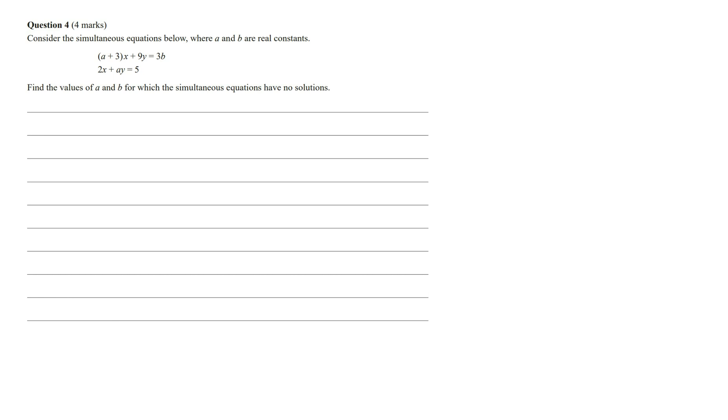In this video, I'm going to show you how to answer the 2023 Maths Methods Sample Exam 1, Question 4. We've got: Consider the simultaneous equations below where A and B are real constants. Find the values of A and B for which the simultaneous equations have no solutions.